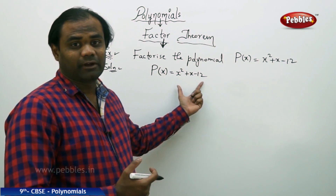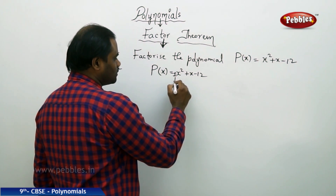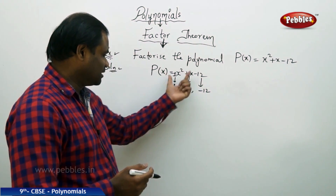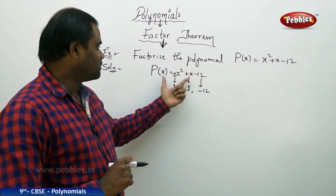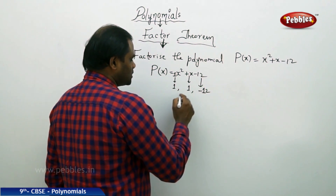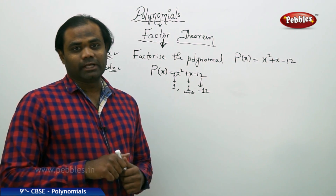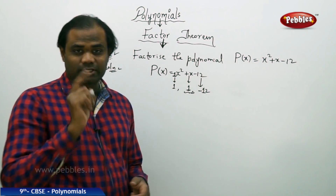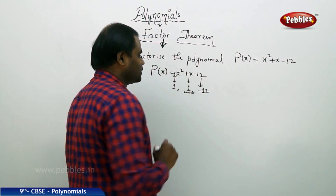This quadratic polynomial has coefficients: the first coefficient is 1, the coefficient of x is 1, and the constant is negative 2L. I initially pick all the coefficients or constants from the given polynomial. So the coefficients are 1, 1, and minus 2L. Now I take the middle term, which is always the coefficient of x. The first condition in Factor Theorem is that the coefficient of x squared — the highest degree — should always be made equal to 1, and here it is directly 1.